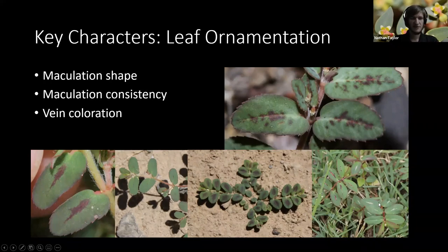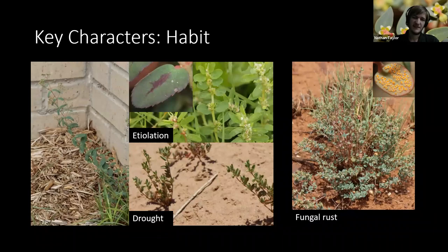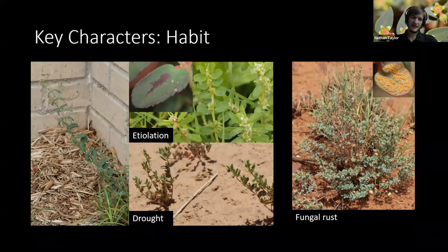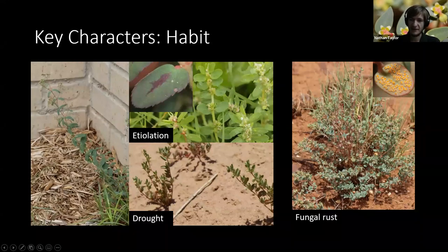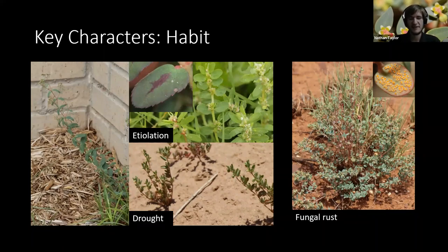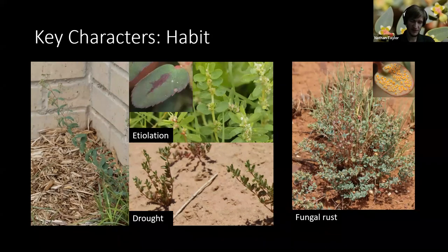The next thing I want to talk about is key characteristics that needed greater elaboration. Leaf maculations are underutilized as a taxonomic characteristic. Even though their presence isn't consistent, their shape is often consistent — a splotchy pattern occurs primarily in Euphorbia abramsiana, whereas other species may have a more linear shape. Also, you have variations in vein ornamentation. Regarding habit: erect plants can grow as a consequence of etiolation or drought, which can make plants grow straight upright and lead you to key to the wrong spot. Fungal rust can also make plants grow upright.